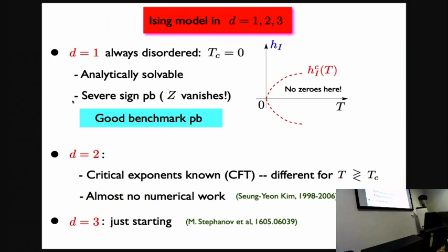I haven't mentioned the number of dimensions yet. In one dimension, you have a spin chain, and your Ising model in the absence of external field is always disordered at any temperature. So Tc, the critical temperature, is zero. At any non-zero temperature, you will have a phase where there are no zeroes and then edge singularities. It's analytically solvable, so it's a good benchmark problem to compare Monte Carlo with exact results. In two dimensions, you know the critical exponents as you approach these lines. You can try Monte Carlo, and in more than two dimensions, essentially nothing has been done yet.